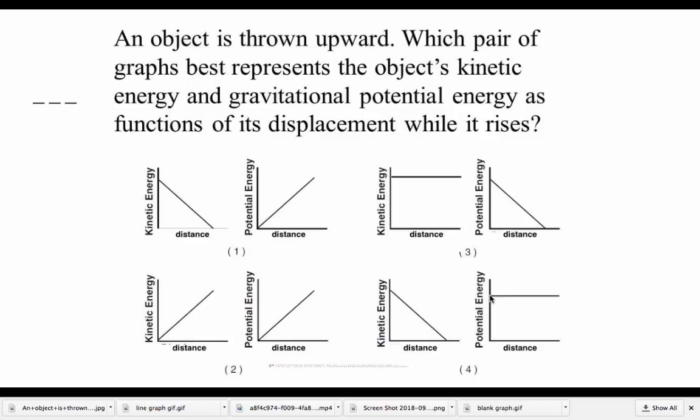Potential energy straight across means that the potential energy is staying exactly the same, no matter how far away it gets from me. That's not the case. If I throw it up in the air, the potential energy should be increasing. So I'm looking for an upward slope for potential energy.